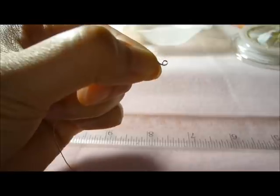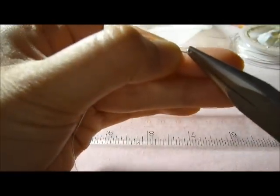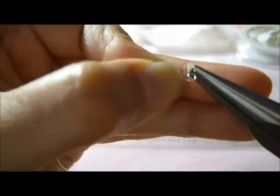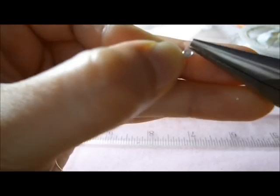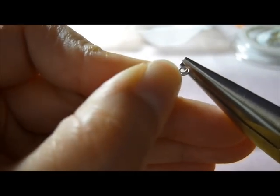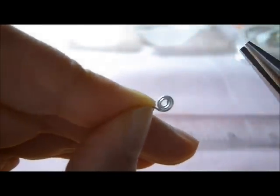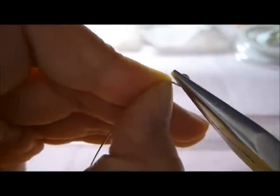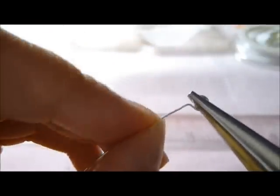Just readjust it, and then take your flat nose pliers again and basically just coil it. This time I'm kind of coiling it towards that way. Then use your finger and just bend it like that so there's like a little bit of a curve right there.